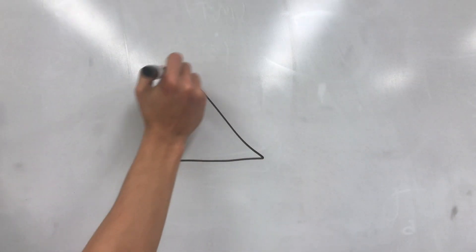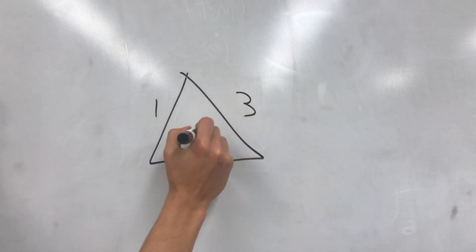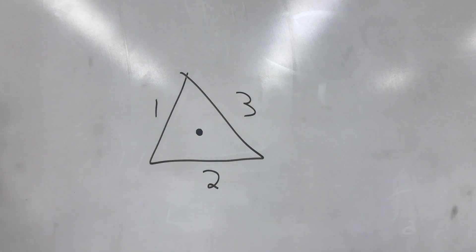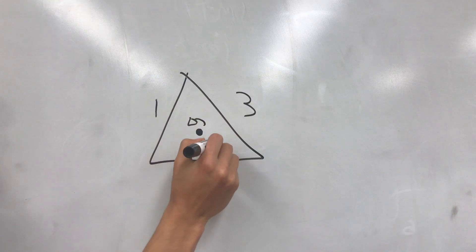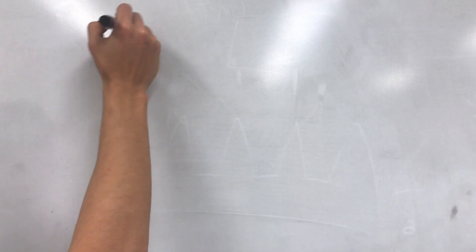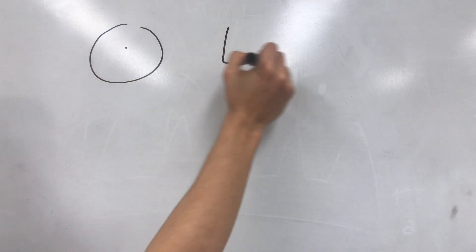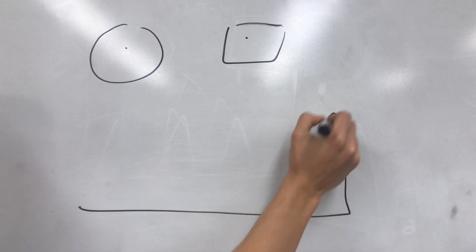A triangle has three sides, so when we plug it into the formula, we see that only one guard is needed. This is true because one guard in the middle could rotate and see every point in a triangle. It turns out that we only need one guard for any convex shape, but does this work for more complex polygons?